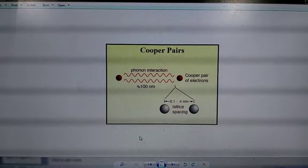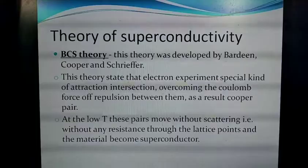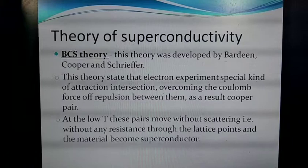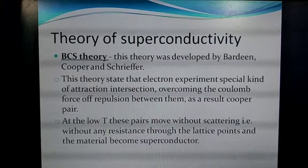The Cooper pair consists of two electrons separated by a distance of around 100 nanometers. The properties of this Cooper pair are different from those of two individual electrons. In BCS theory, the band gap is around 0.001 electron volts, which is very small, and at a certain temperature the material exhibits superconductivity.